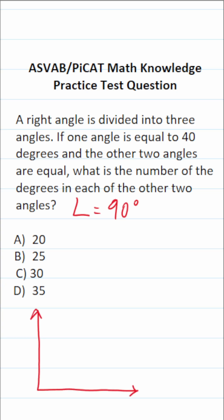So here's my right angle. According to the problem, we know one of these angles is 40 degrees. So let me go ahead and draw that accordingly. And in addition, we know that these other two angles are equal to each other.